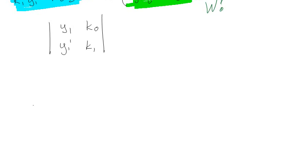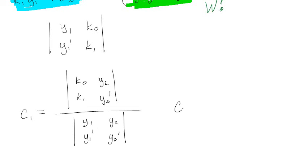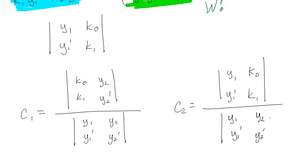So it might not be totally obvious until you see them side by side. So basically the idea is that if I know all these things, I have that c1 is the determinant of k0 k1, y1 y1 prime, over the Wronskian, which is y1 y1 prime, y2 y2 prime. And then for c2, I actually end up with something that looks very similar, which is y1 y1 prime, k0 k1, over y1 y1 prime and y2 y2 prime.